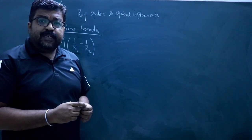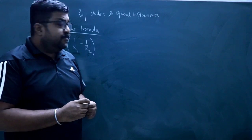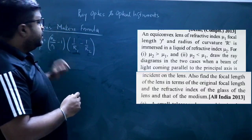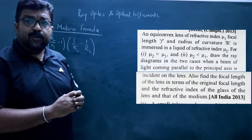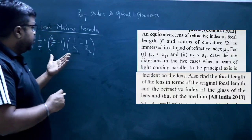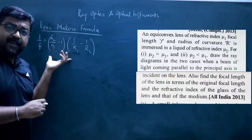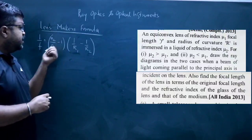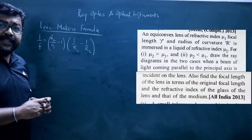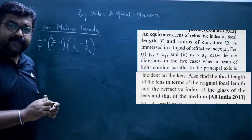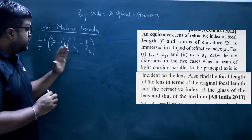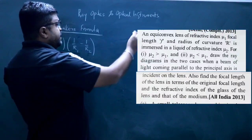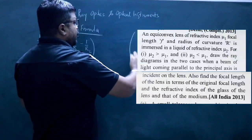Here's another question: if N2 is greater than N1, how will the lens behave? If N2 is smaller than N1, how will it behave? Suppose it is a bi-convex lens.